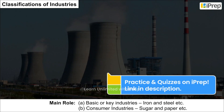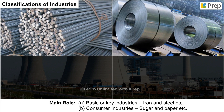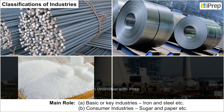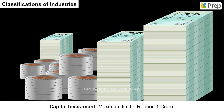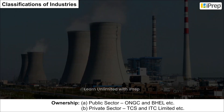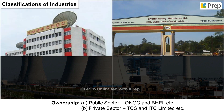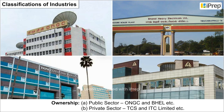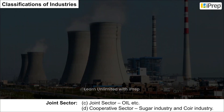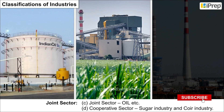Classification by main role includes basic or key industries such as iron and steel, and consumer industries such as sugar and paper. By capital investment, the maximum limit is rupees 1 crore. By ownership: public sector includes ONGC and BHEL; private sector includes TCS and ITC Limited; joint sector includes Oil India; and cooperative sector includes the sugar industry and coir industry.